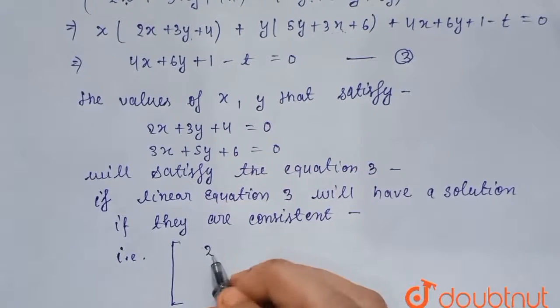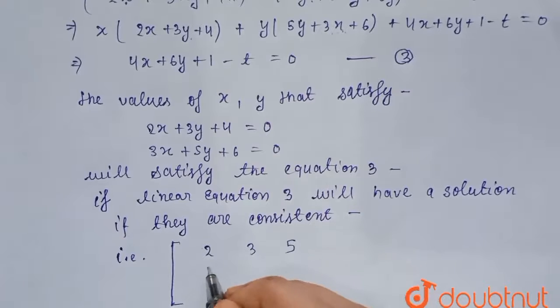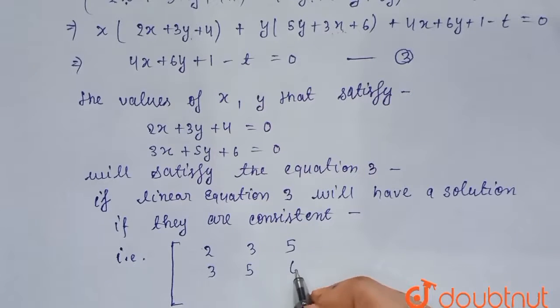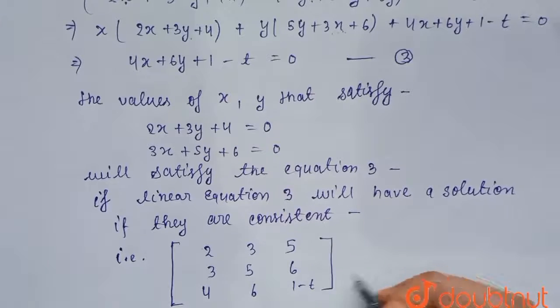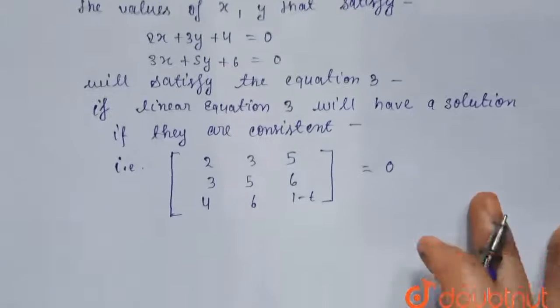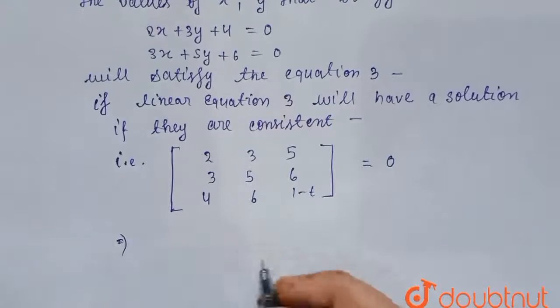We have matrix of 2, 3, 4; 3, 5, 6; 4, 6, 1 minus t equals to 0. Now, solving this matrix.